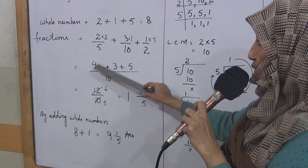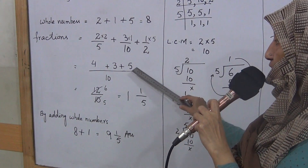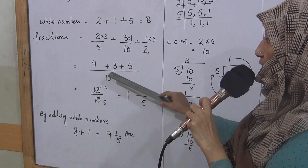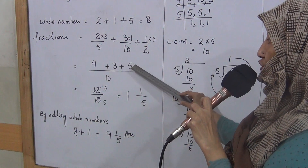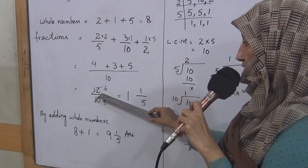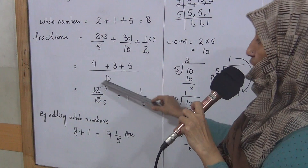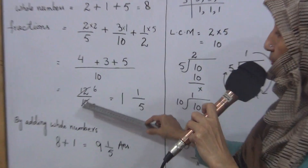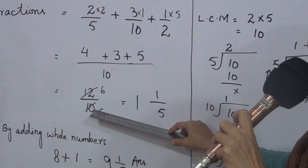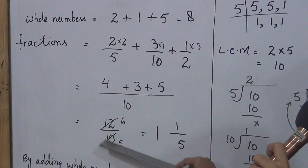Now we add these three numerator values: 4 plus 3 is 7, and 7 plus 5 is 12. After adding the fractions, the answer is 12 upon 10. So 12 upon 10 is the result of the addition of the fraction parts.